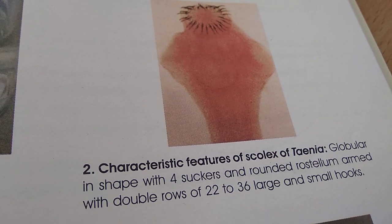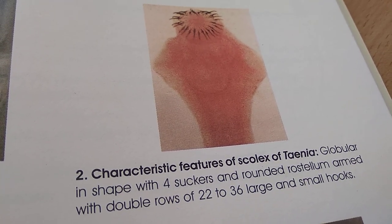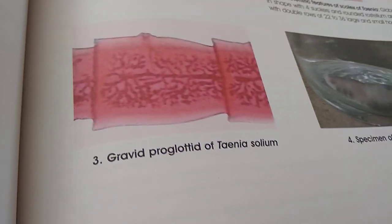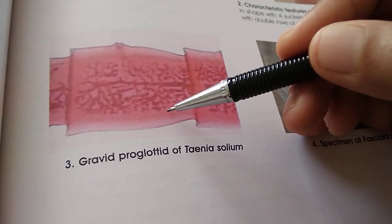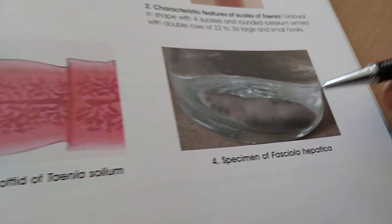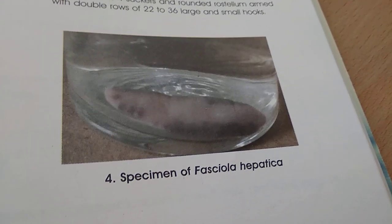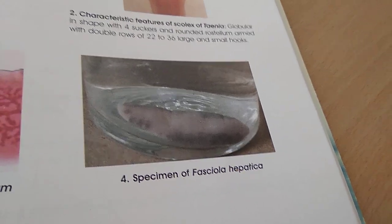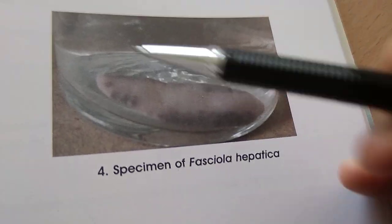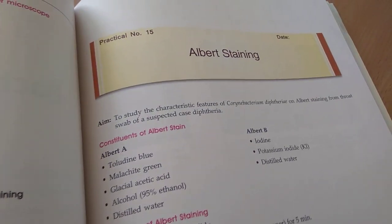This is a scolex of Taenia. And what is this? Gravid proglottid of Taenia solium — I really don't know this one. Specimen of Fasciola hepatica — can't see clearly what they are trying to show here; there is something in this jar. Kind of like the book though, because it's so colorful, you feel like actually looking at it.